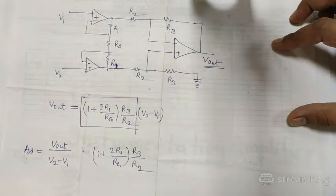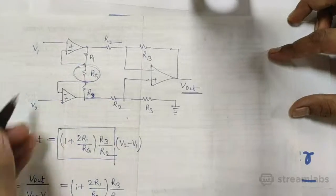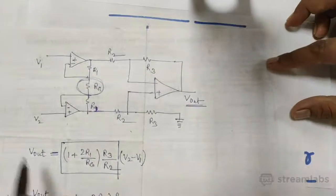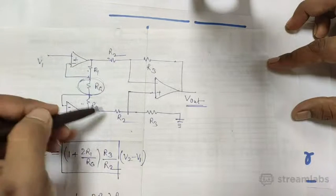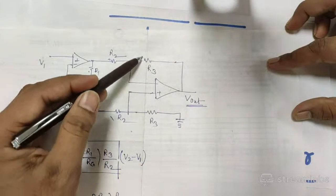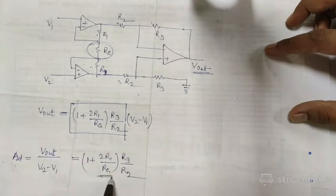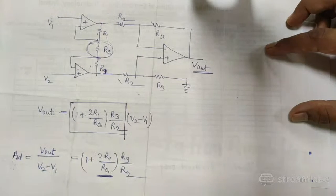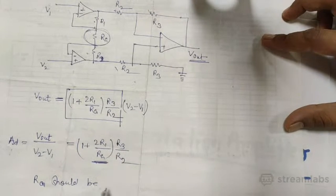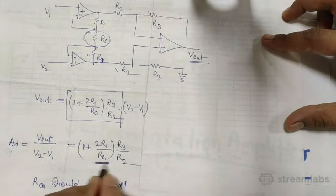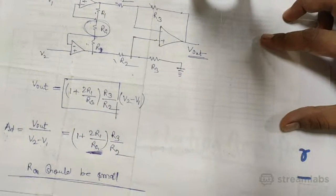This Rg is the key — if I want to change R1, I have to change it at two places; if I change R2, I have to change it at multiple places; if I change R3 to improve the gain, I have to change it at two places. But if I change only Rg, it is a single resistance. Rg should be kept as small as possible — the smaller Rg is, the higher the gain becomes.